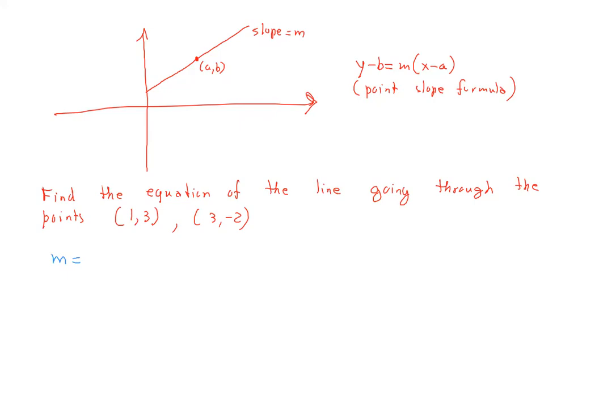The slope is simply (3 - (-2)) over (1 - 3), which is 5 over -2, so minus 5 halves.